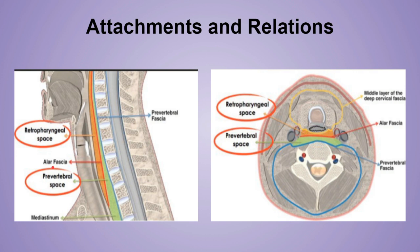The attachment and relations of the pre-vertebral fascia: superiorly, it is attached to the base of the skull. Inferiorly, it extends up to the superior mediastinum, where it divides into two main layers — the anterior layer and the posterior layer. The anterior layer is known as the alar fascia, and it blends with the buccopharyngeal fascia. The posterior layer is attached to the anterior longitudinal ligament and the body of the 4th thoracic vertebra.